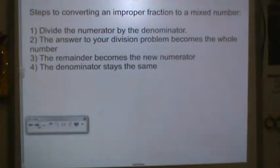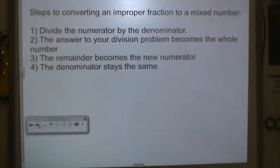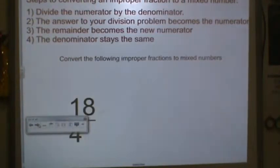1. Divide the numerator by the denominator. 2. The answer to your division problem becomes the whole number. 3. The remainder becomes a new numerator. And 4. The denominator stays the same.